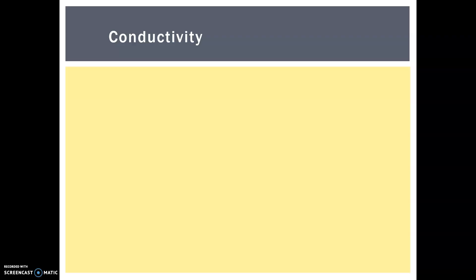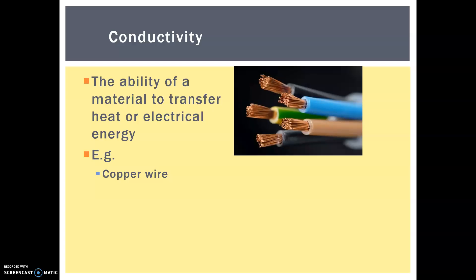Next we have conductivity. This is the ability of material to transfer either heat energy or electrical energy. So copper wire is very electrically conductive. That's why it's used in all our wiring. In fact, gold is only one material that's actually more conductive, but surprisingly enough we don't use it because it would be way too expensive.